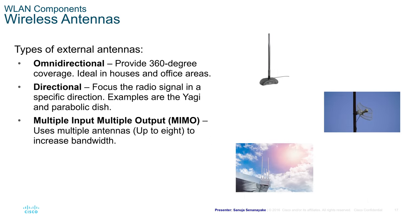Wireless antennas. There are three different types of wireless antennas: omnidirectional, directional, and multiple input multiple output, or MIMO antennas. Omnidirectional antennas provide 360-degree coverage and are ideal in houses and offices.